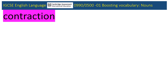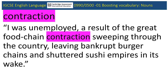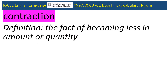Now on to contraction, from the 0990 June 2020 paper. In this rather strange section of the text, the narrator Clay is reflecting on losing his job as a designer and social media voice for the HQ of a trendy burger company. What happened to contribute to him losing his job? Define contraction. Well, it's a reduction in something — a squeezing, a tightening — in this case resulting in a reduced number of food chains around the country.